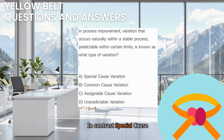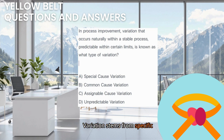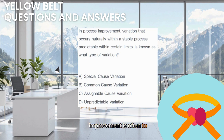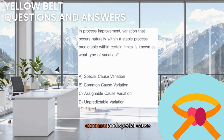In contrast, Special Cause Variation — also sometimes called Assignable Cause Variation — stems from specific, identifiable events that are not part of the normal process, like a machine malfunction or a new operator making an error. The goal of process improvement is often to reduce Common Cause Variation and eliminate Special Cause entirely. Understanding the difference is key to effective process control.